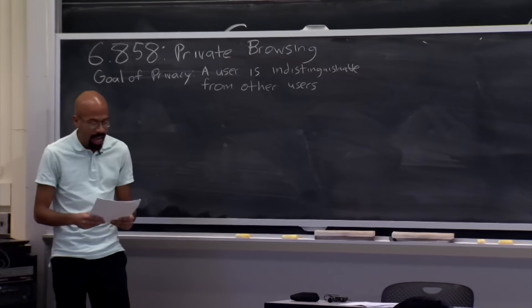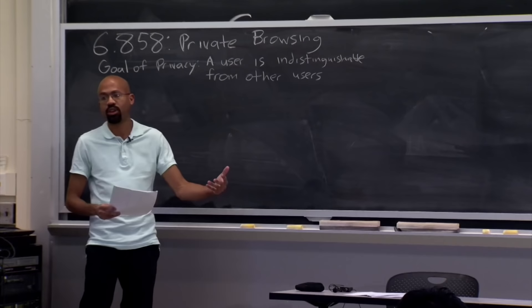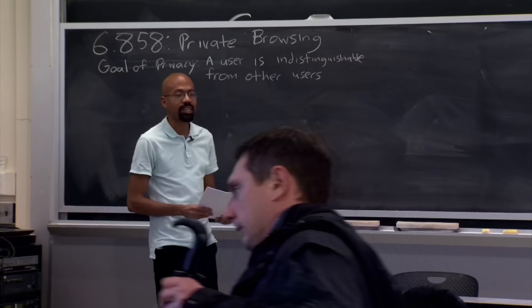At a high level, they're talking about the following goal: any particular user should be indistinguishable from a bunch of other users. In particular, the activity of a given user should be sort of non-incriminating when viewed in light of activity from a bunch of other different users. Today we're going to talk about privacy in the specific context of private web browsing.